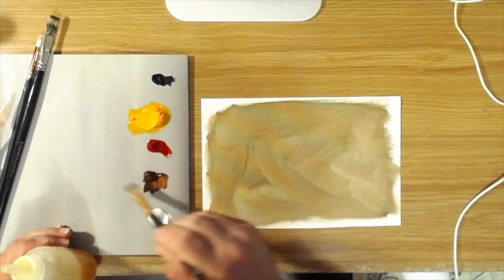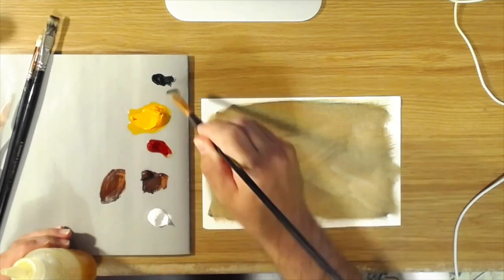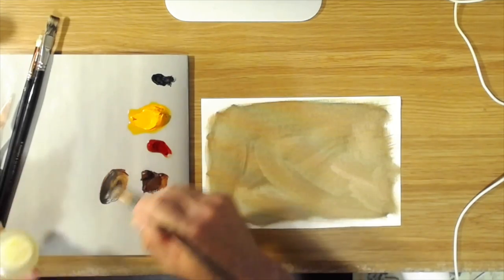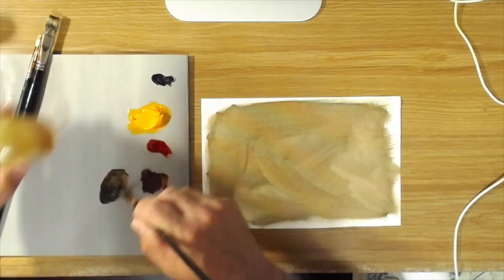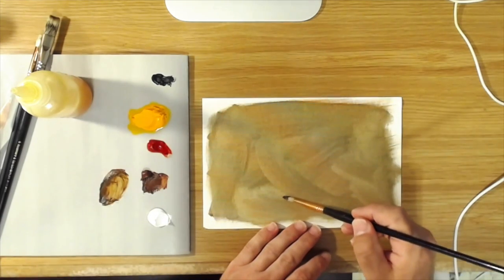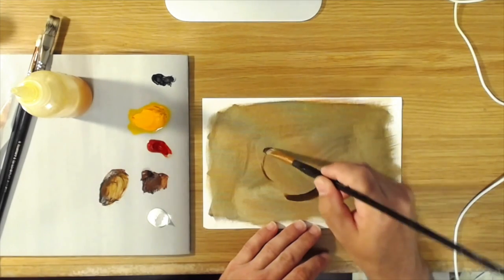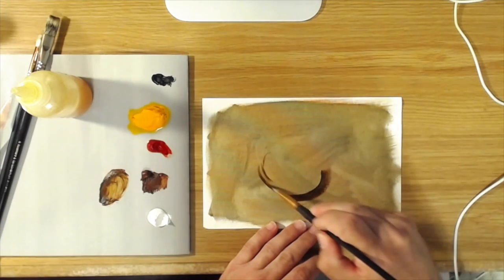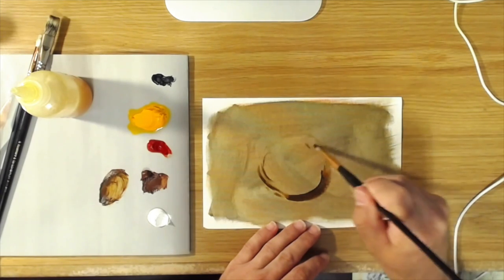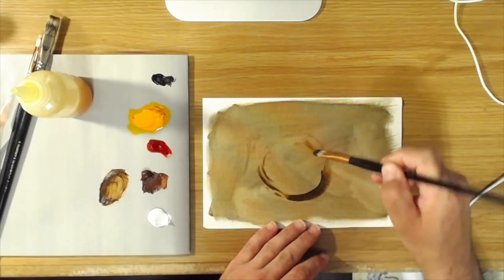I'm going to start my shadows by mixing a little bit of burnt sienna with a tiny bit of black. Add a little medium there to thin it down. Burnt sienna is fairly transparent. Let me sketch in the orange first.